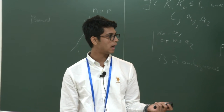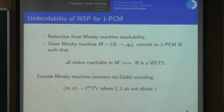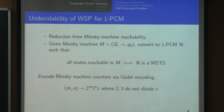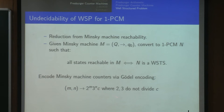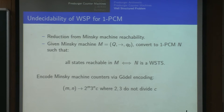We have just one counter in our Pressburger machine, whereas the Minsky machine has two counters. So we encode using the Gödel encoding, whereby we store the values of the counters in the exponents for 2 and 3.